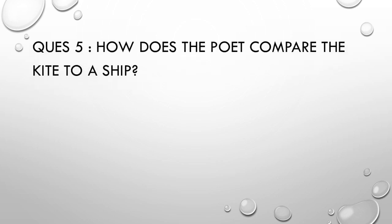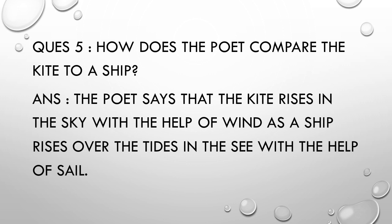Question 5: How does the poet compare the kite to a ship? In the poem, the lines 'then soars like a ship' use simile — a figure of speech used to compare the kite to a ship. Answer: The poet says the kite rises in the sky with the help of wind, just as a ship rises over the tides in the sea with the help of a sail. In this way he makes the comparison between the kite and a ship.